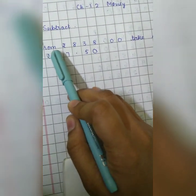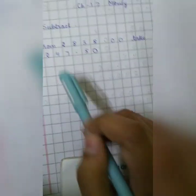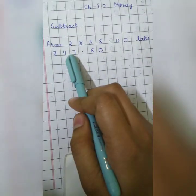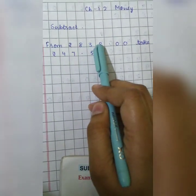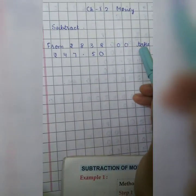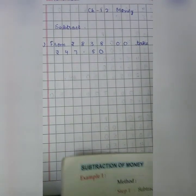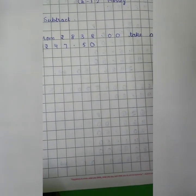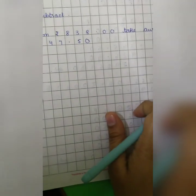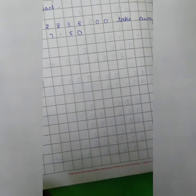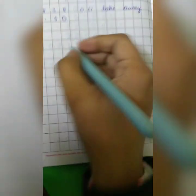We have to subtract. The question is given in words form. From 838 rupees take away 47 rupees and 50 paise. So take away means subtraction. We have to take away the small amount from the larger one. Right?